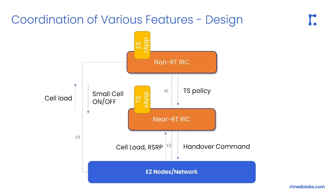The proposed energy saving RAP is located in the non-real-time RIC and receives information about long-term cell load through the O1 interface. On the other hand, the traffic steering XApp receives information about current cell load used for load balancing.